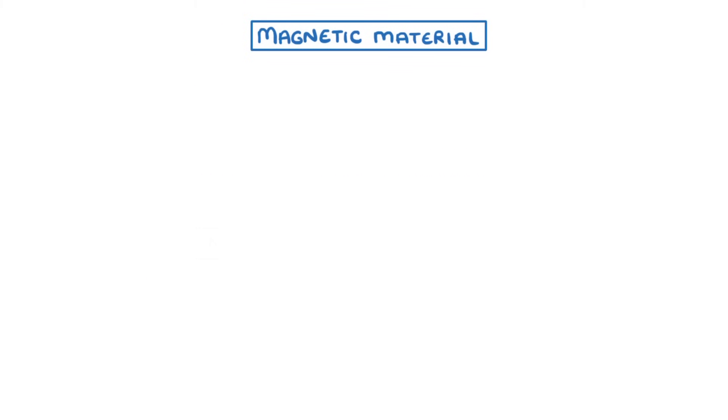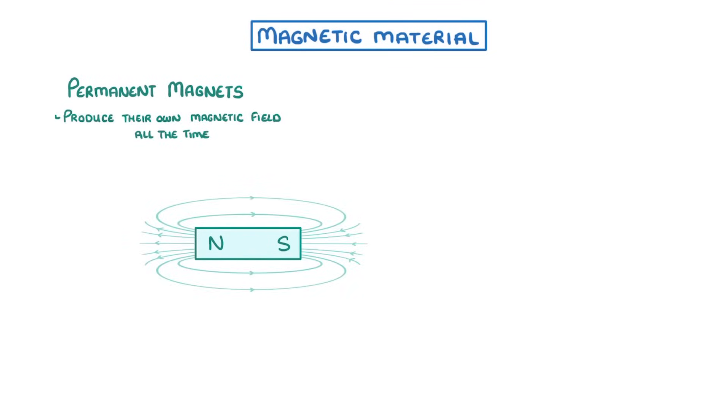When we think about magnets, like a common bar magnet, what we're really thinking about are permanent magnets, which produce their own magnetic field all the time.